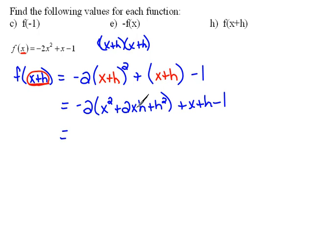Now we can distribute our negative 2 throughout. So that would be negative 2x squared minus 4xh minus 2h squared plus x plus h minus 1.